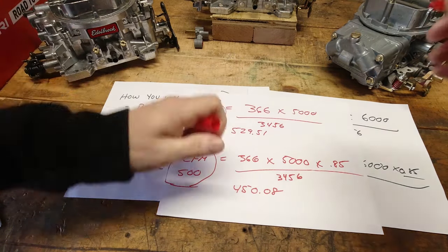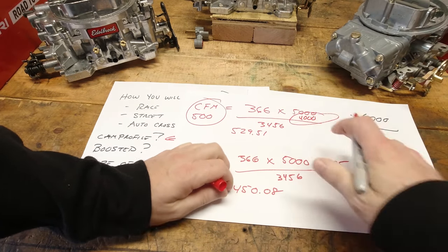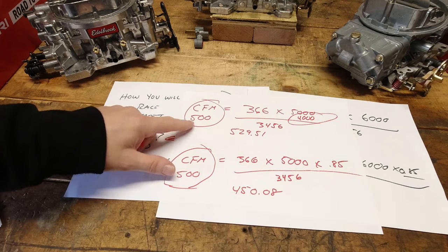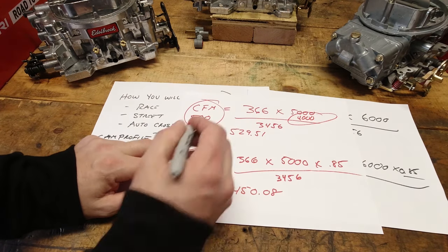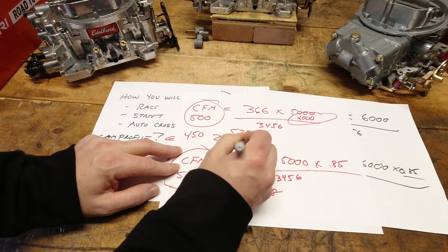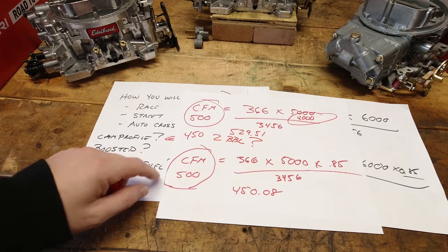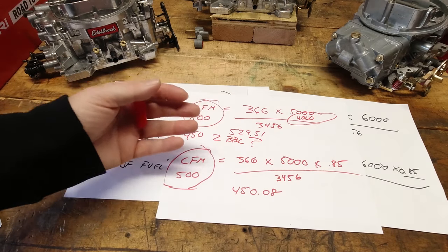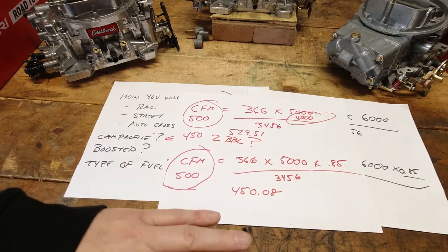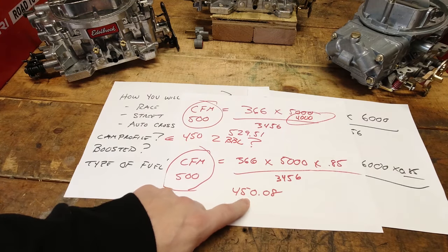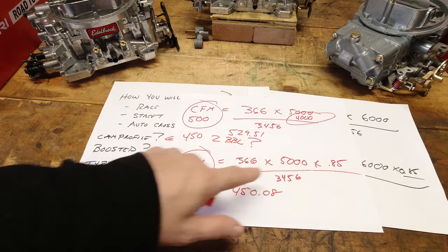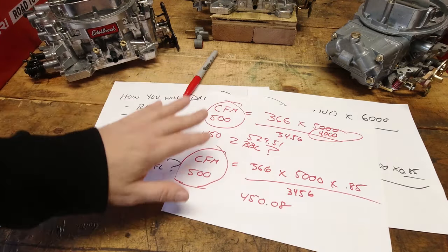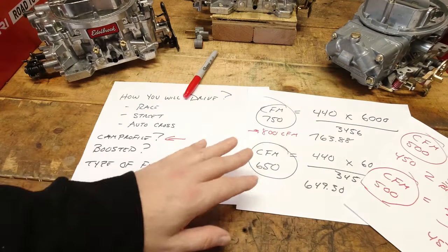Going back to the dump truck — it may not actually operate at 5,000 RPM; it may only rev to 4,000. That drops the CFM rating down quite a bit and maybe it doesn't even need a four-barrel — maybe it needs a two-barrel. A 366 cubic inch at 5,000 RPM, a lot of people just assume it's a street car application, but it's a dump truck. It doesn't rev high; it needs low-end torque and grunt, and a two-barrel is really good at delivering that. You have to take all of these questions into consideration — the math problem is a starting point, not the final answer.